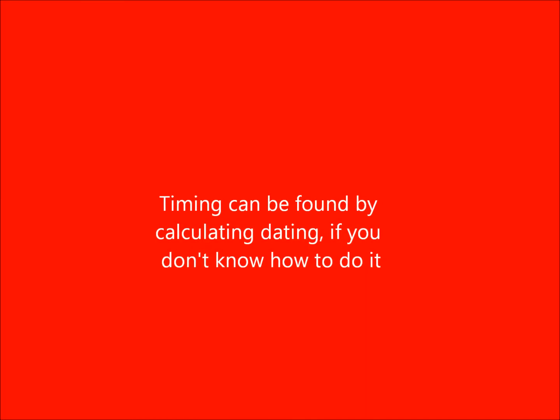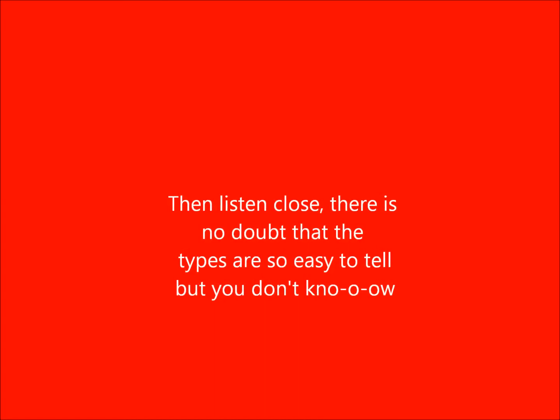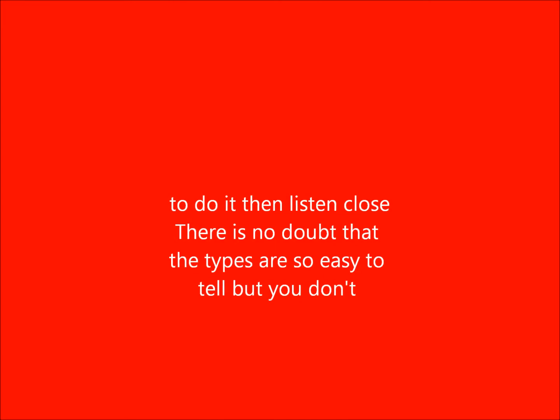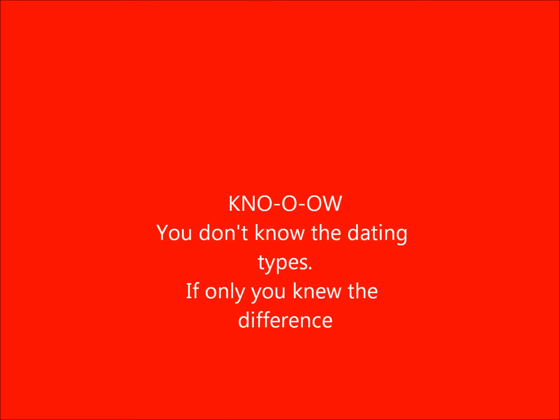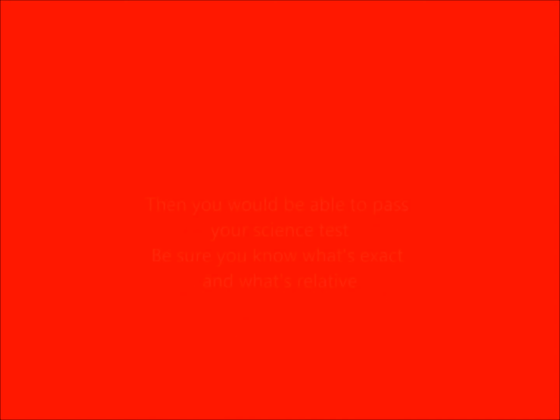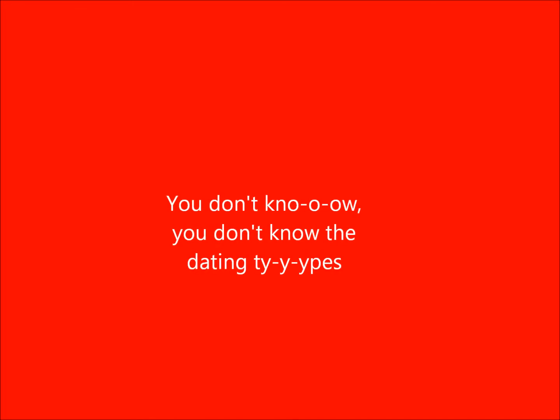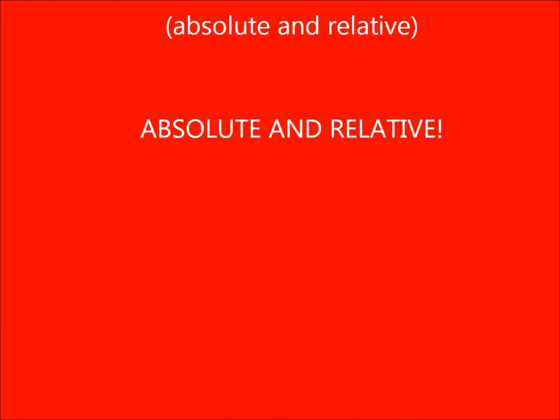Timing can be found by calculating dating. If you don't know how to do it then listen close. There is no doubt that the types are so easy to tell. You don't know the dating tides. If only you knew the difference, then you would be able to pass your science test. Be sure you know what's exact and what's relative. You don't know the dating tides — absolute and relative.